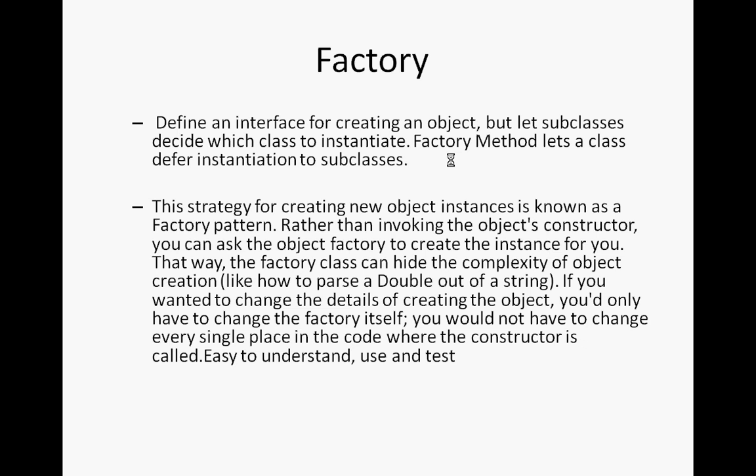Another benefit of the factory class is that it hides the complexity of object creation. For example, in our .NET framework, if you take a conversion of string to double, we use Convert.ToDouble — we are passing the string, but internally it uses some complex logic, creates a double object, and passes it back. Double is basically a structure. So the complexity of object creation logic is hidden from the user.